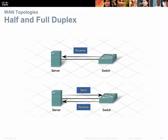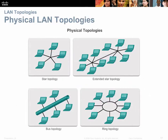Half duplex is like using a CB radio — you can only talk while they listen, then you switch turns. With full duplex, you can send and receive simultaneously. Physical LAN topologies include: a star with a hub in the center interconnecting multiple end devices; an extended star with several hubs interconnected; a bus topology using coaxial cable to which multiple devices connect (as Comcast uses for cable internet); and a ring topology like IBM Token Ring, where devices are physically cabled in a circle.